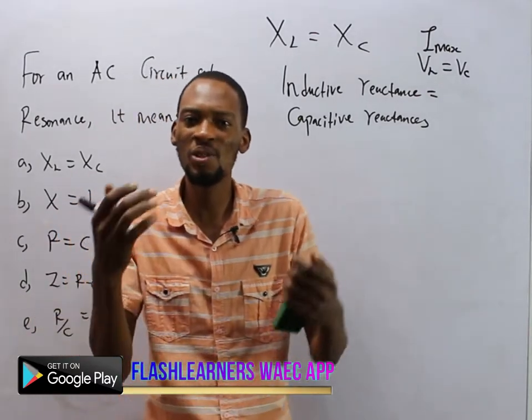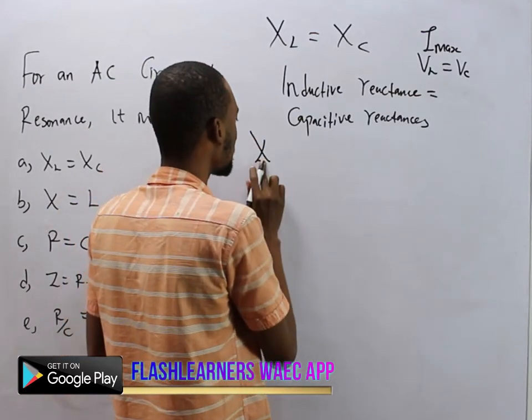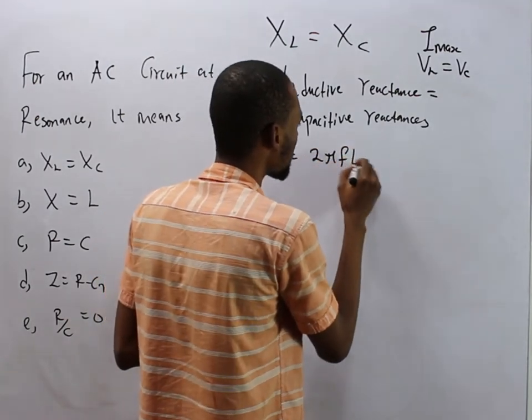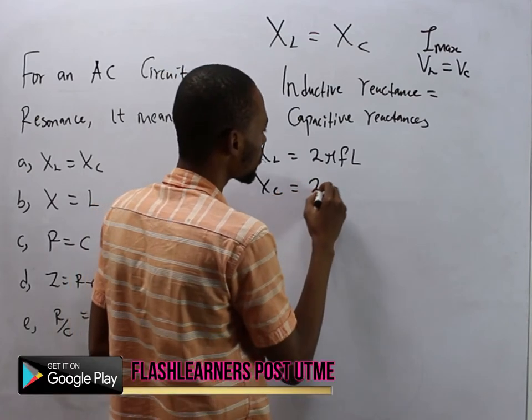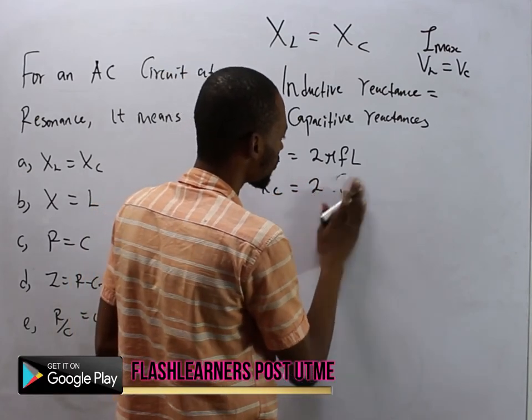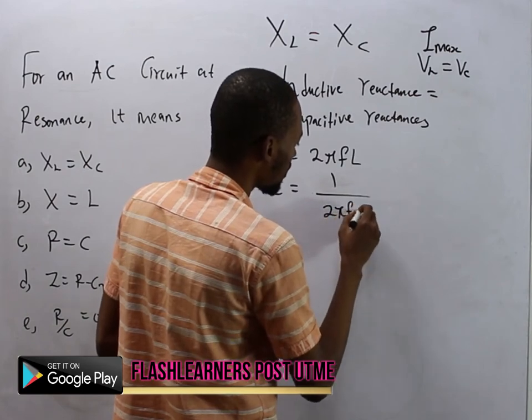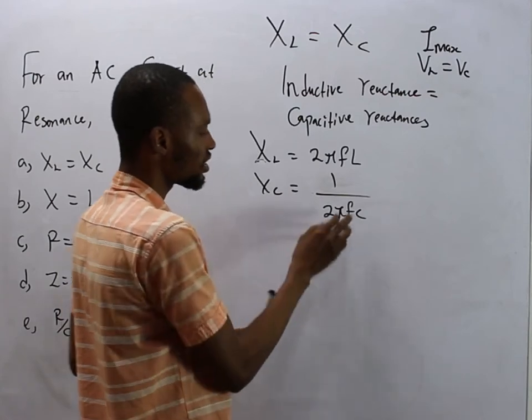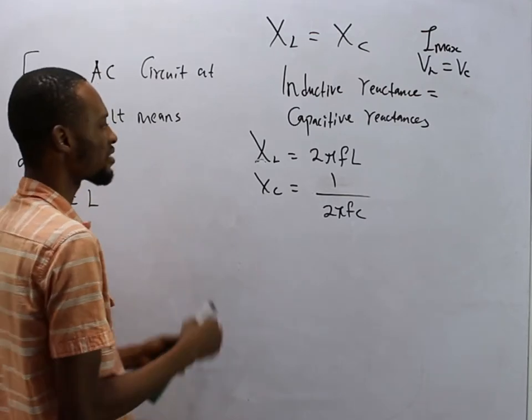Now, inductive reactance is simply 2πfL. Capacitive reactance is equals 1 over 2πfC, where C is the capacitor, f is the frequency, π is constant, and L is the inductor.